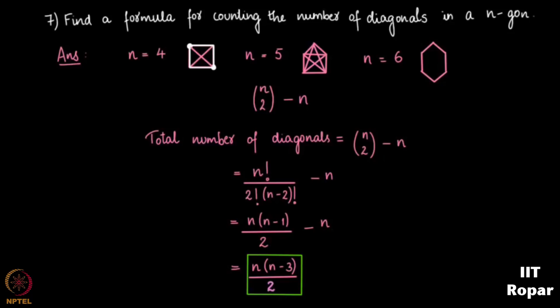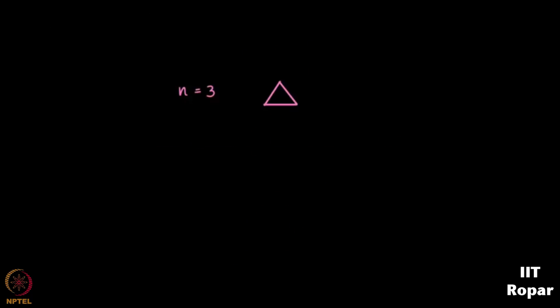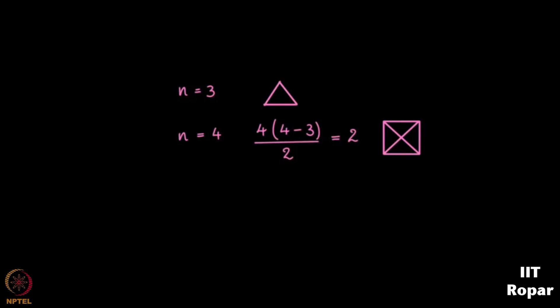We need N to be at least 3. For N = 3 (a triangle), substituting gives 3(3−3)/2 = 0 diagonals, which is correct since every vertex is connected to every other vertex. For N = 4 (a square), we get 4(4−3)/2 = 4/2 = 2 diagonals. This formula works for any N-gon.